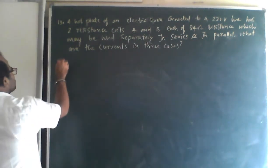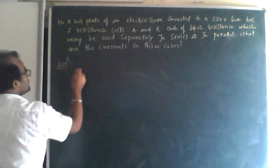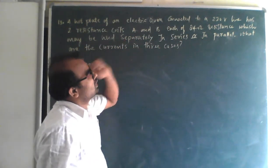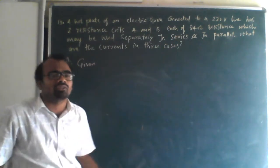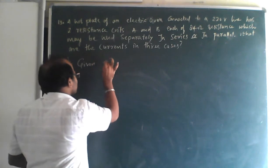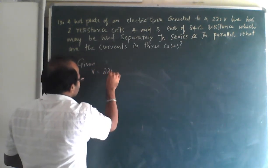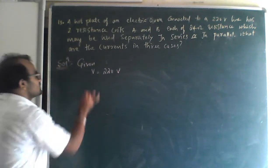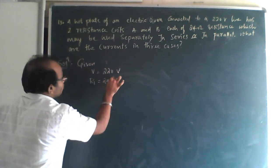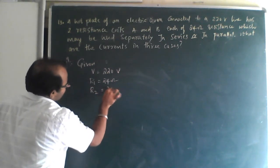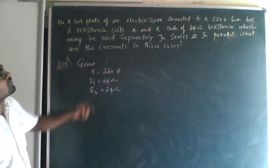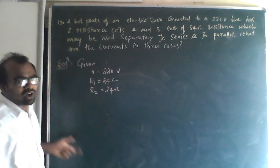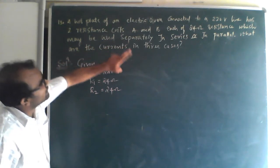Now let us write the solution. What is given: the hot plate of the electric oven is connected to a 220-volt supply, so voltage V = 220 V. It has two resistance coils A and B, each of 24 ohms, so R1 = R2 = 24 ohm. They may be used separately, in series, or in parallel. We need to find the current in three cases.